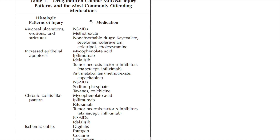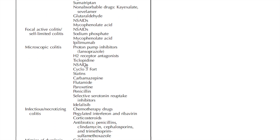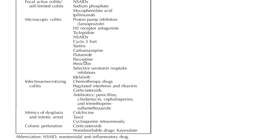And that's it. The last page has a nice summary table of everything we went over — the various histological patterns of injury. A lot of this overlaps: increased apoptoses, chronic colitis patterns, ischemic colitis, lymphocytic colitis. It's good to know and be aware of. It won't necessarily point to a specific drug, but it's good to review our patients' charts, see what medications they're on, and factor that into what we're seeing under the microscope.